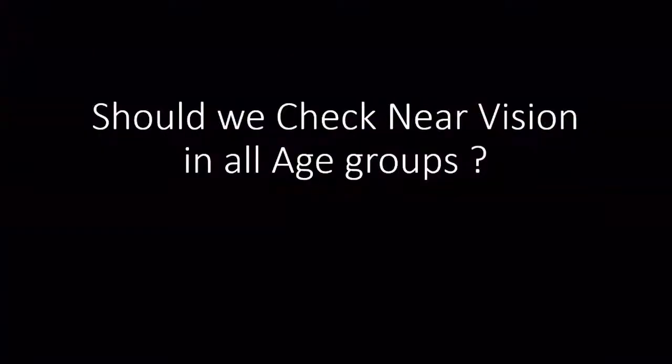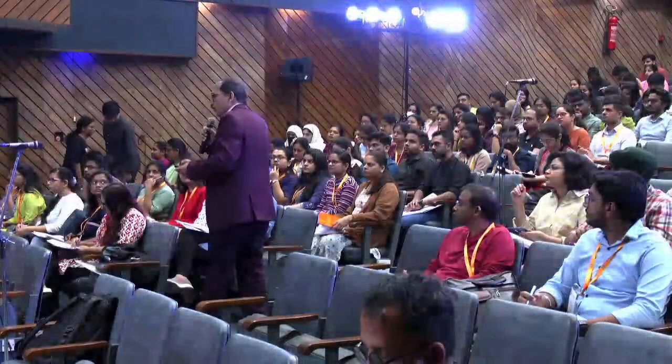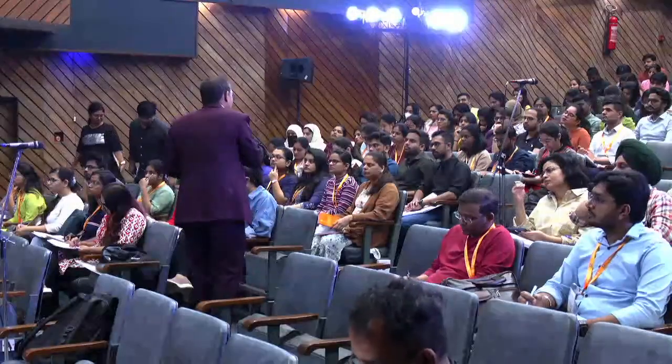If previous data is not available, use the modified Maloney method: on the topographer, move the cursor to the center, take the central corneal power, multiply by 1.1, and subtract 6.1 dioptres to get the corrected central corneal power for IOL calculation.